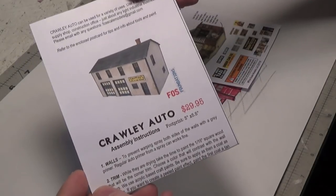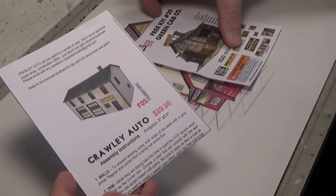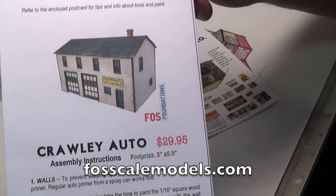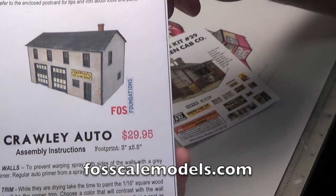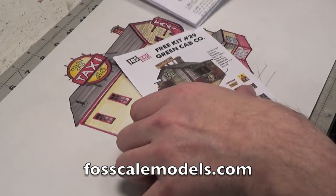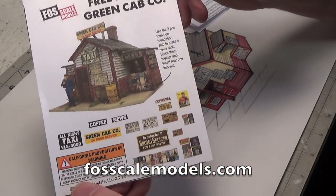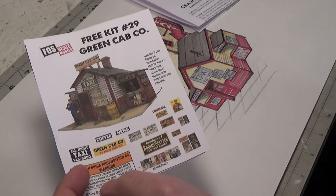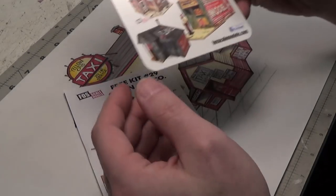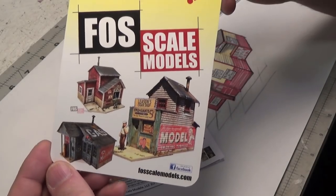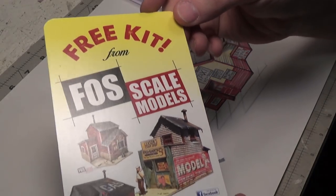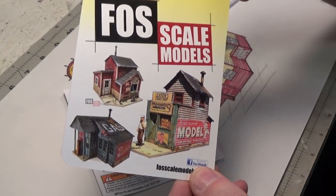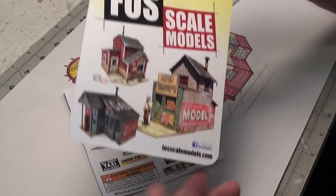So for our new project we are using two kits from Fosscale Models. We are using Crawley Auto which is $29.95 on their website and we are using a free kit that they offered. Now Fosscale Models once a year offers a free kit for a very limited time. So be sure to follow their Facebook page or their website to be sure you're notified when they offer the free kit.